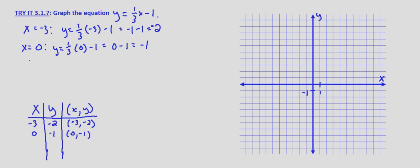And then we want to use at least one more point. You can use more points just to be sure, but this way we at least know that our first two were correct if we end up with a straight line - that's what we're looking for, the graph of a line.